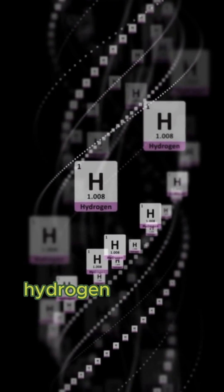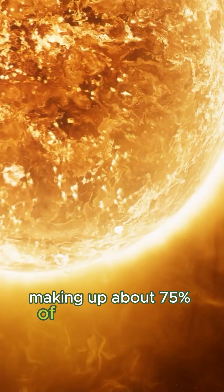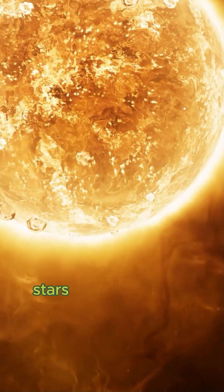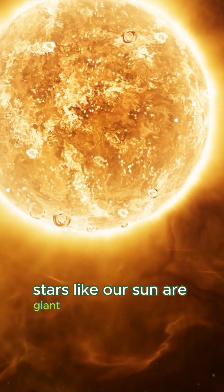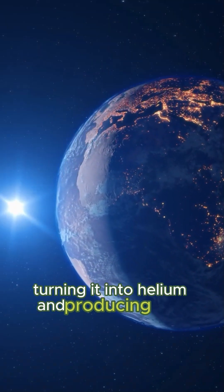First, hydrogen is the most abundant element in the universe, making up about 75% of all normal matter. Stars, like our sun, are giant hydrogen fusion reactors, turning it into helium and producing light and heat.